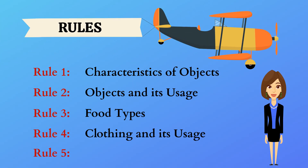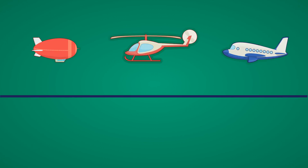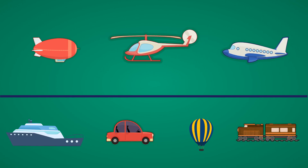Rule five: transportation type. In the top row we have an airship, a helicopter, and an aeroplane. In the bottom row we have a ship, a car, an air balloon, and a train. All three items in the top row are flying objects, so in the answer choices we need to find an object that can fly — and the answer is air balloon.